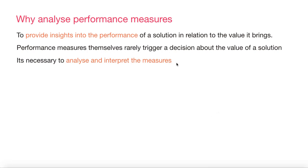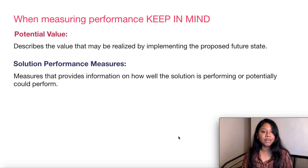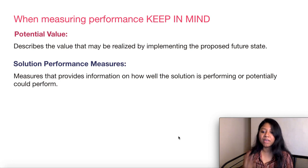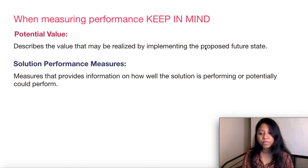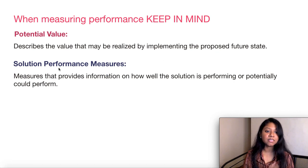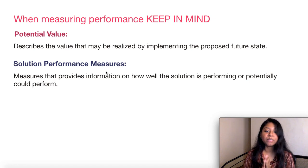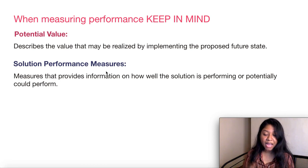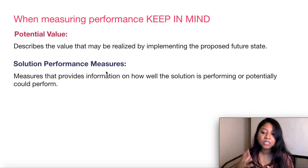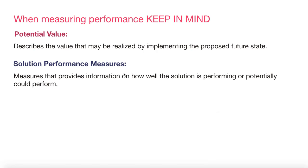When you are going to do this analysis, you need to keep two things in mind. The first is potential value — this describes the value that may be realized by implementing the proposed future state. The second is solution performance measures. As covered in the previous video, you would have collected all that information, and these measures provide insight into how well the solution has been performing and what potential performance could be achieved.